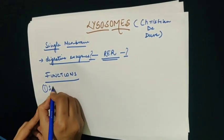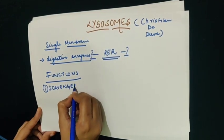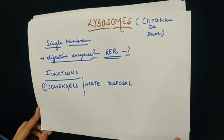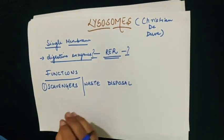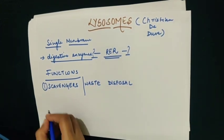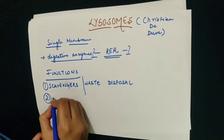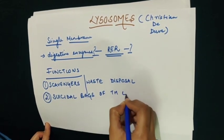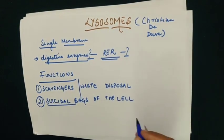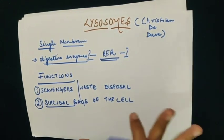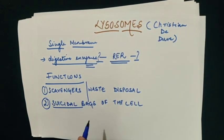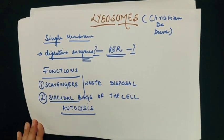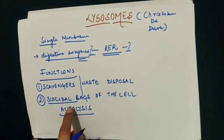Lysosomes are basically called the scavengers of the cell, or the waste disposal system of the cell, because they have very strong digestive enzymes that help in cleaning out the cell and eating out the debris. They are also called the suicidal bags of the cell because once a cell gets damaged, the membrane of the lysosome bursts open and releases these powerful digestive enzymes, which eat up the entire cell. This process is called autolysis, and since lysosomes carry out autolysis, they are called suicidal bags of the cell.